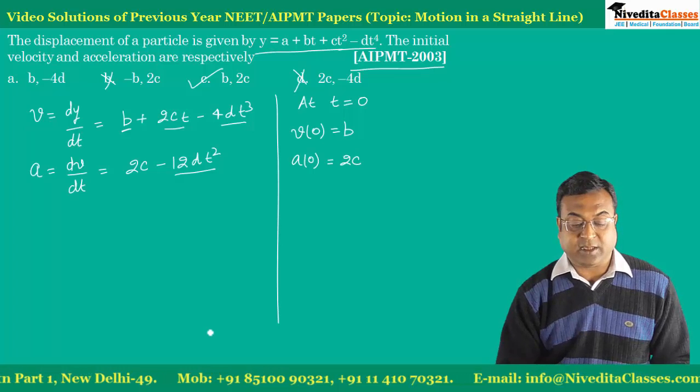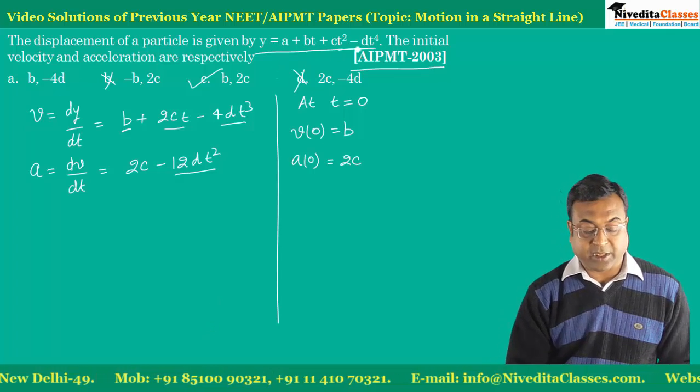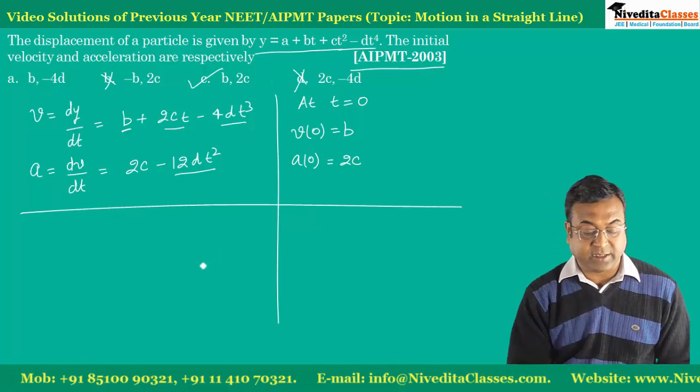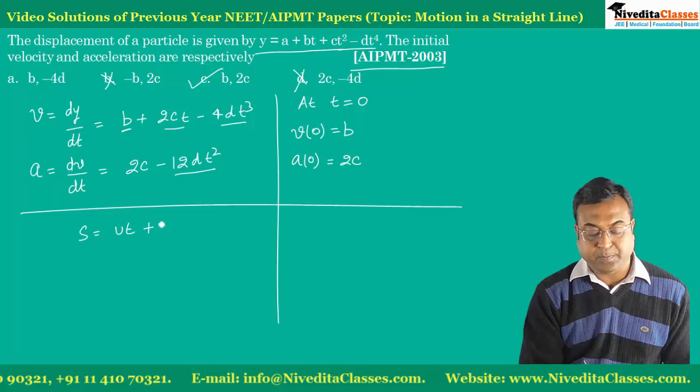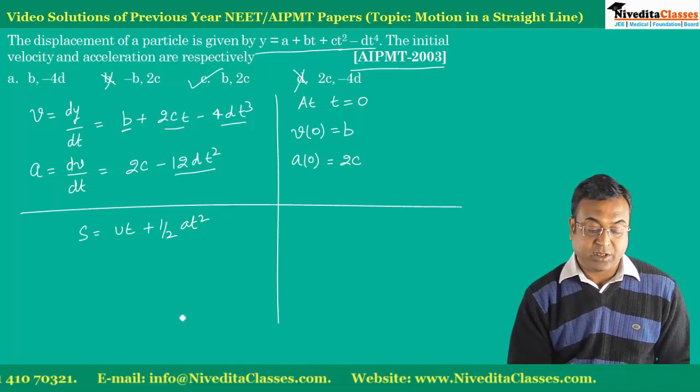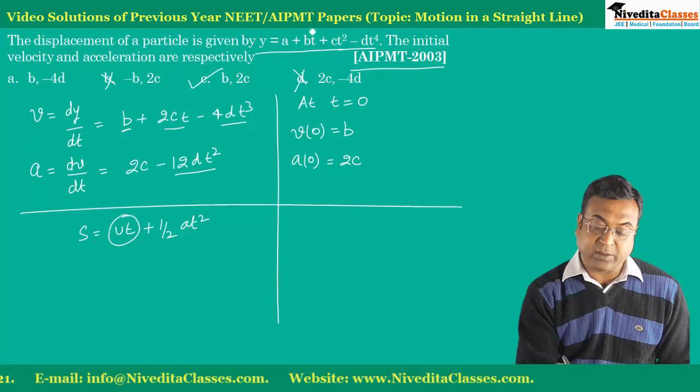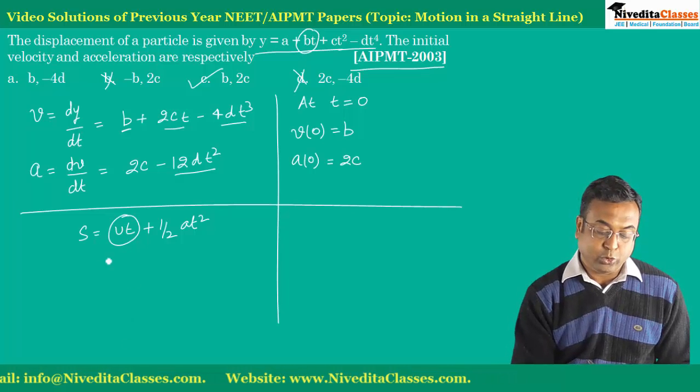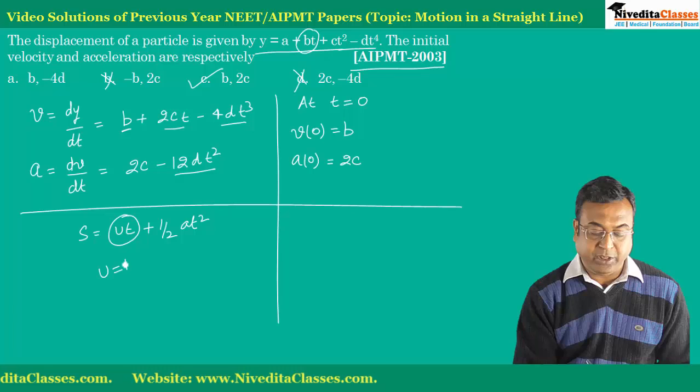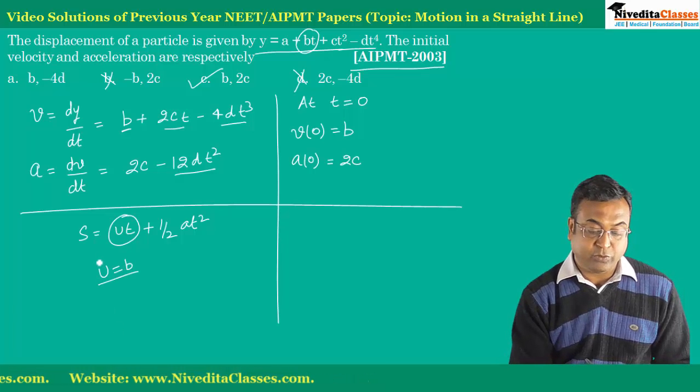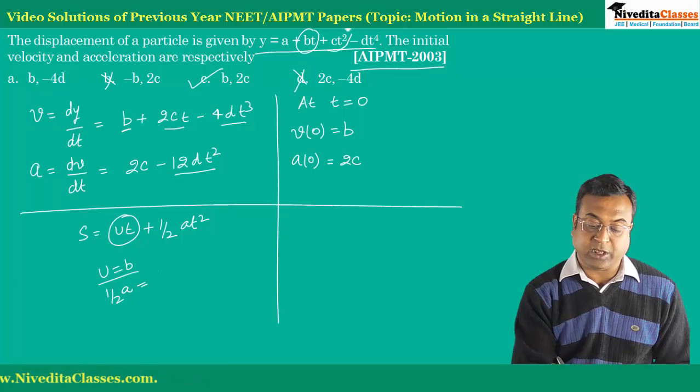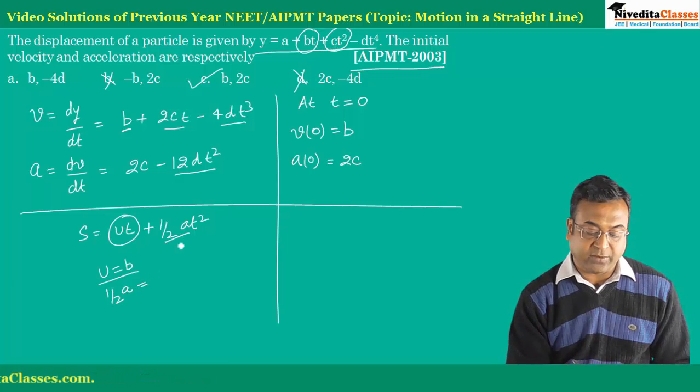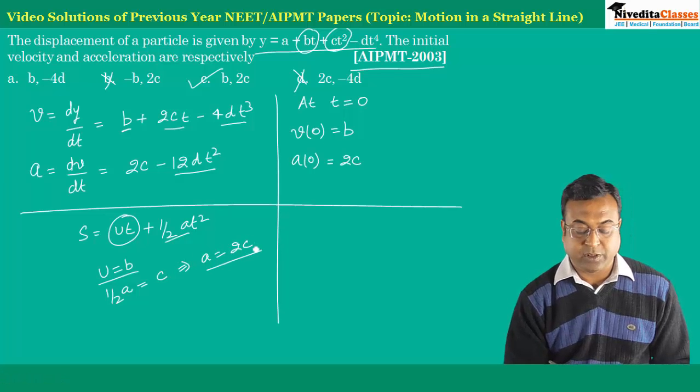Look, otherwise if we talk here, how can we do it instantly? Our relation is s is equal to ut plus half at square. Basically ut matches with bt. So if I match both of these, u becomes b. Initial velocity becomes b. And if I say half a matches with ct square, then half a becomes equal to c, or a becomes equal to 2c.